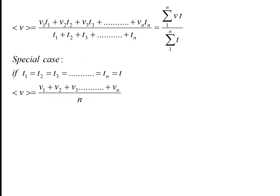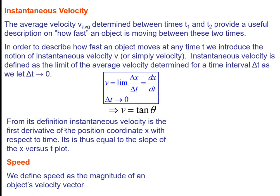If velocity and time are given, replace distance by speed multiplied by time. Special case: if time intervals are equal, the formula becomes (v₁ + v₂ + v₃ + ...) / n. For two equal-time parts: (v₁ + v₂) / 2. For three equal-time parts: (v₁ + v₂ + v₃) / 3.